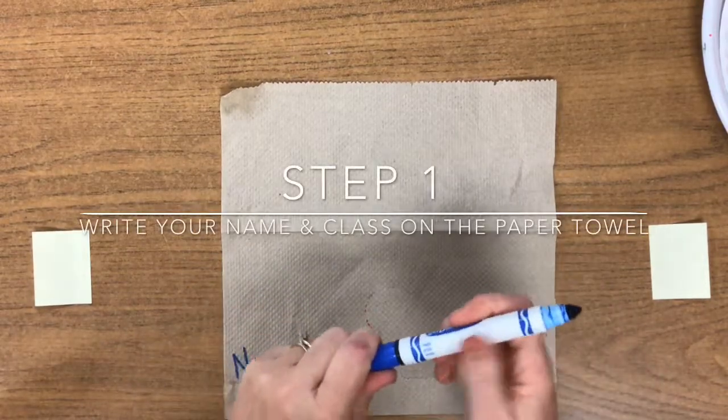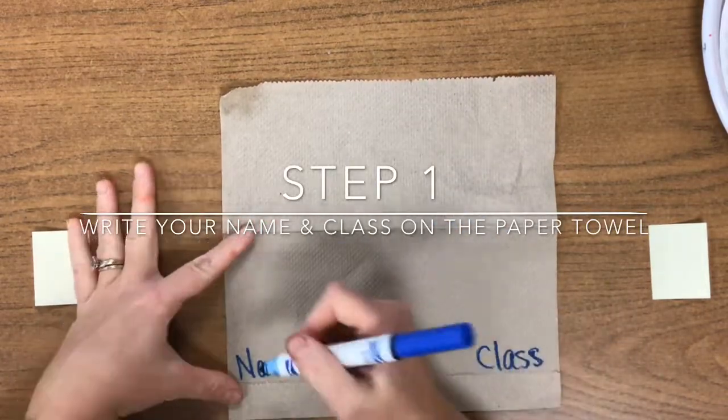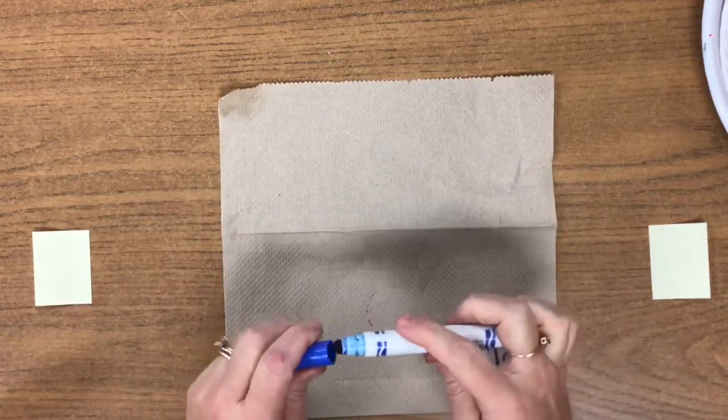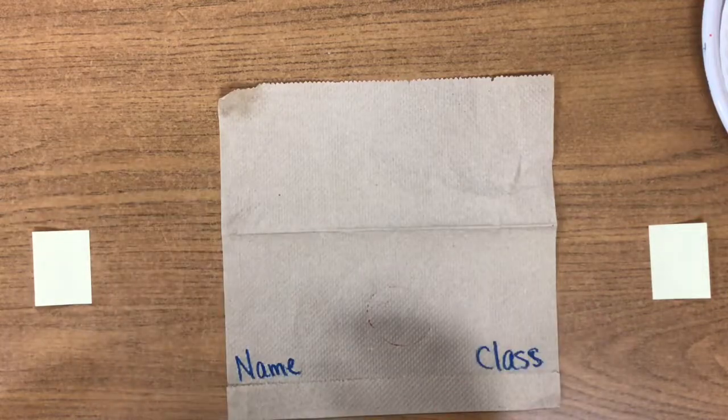The first thing you're going to do is use a regular marker, not a Sharpie because it will bleed through, and put your name and your class at the bottom of your paper towel. When you're done, make sure you snap that cap and give it a nap.